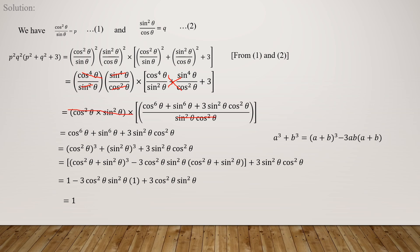The remaining expression is cos⁶θ + sin⁶θ + 3sin²θcos²θ. Now cos⁶θ can be written as (cos²θ)³, and similarly sin⁶θ as (sin²θ)³.